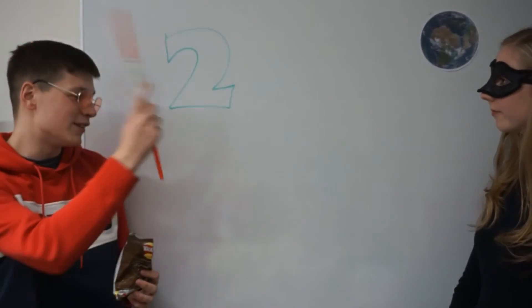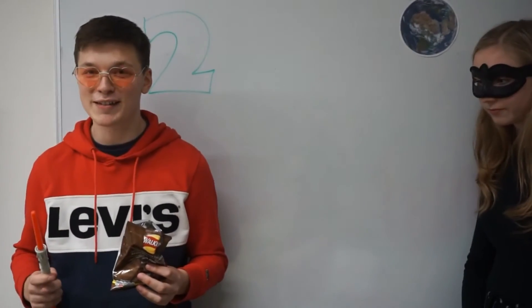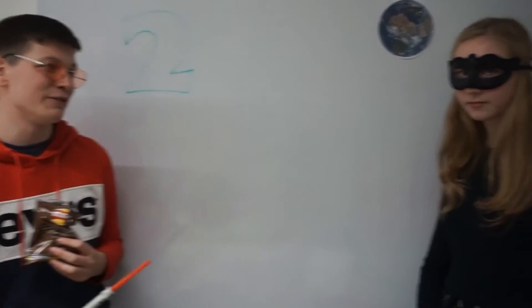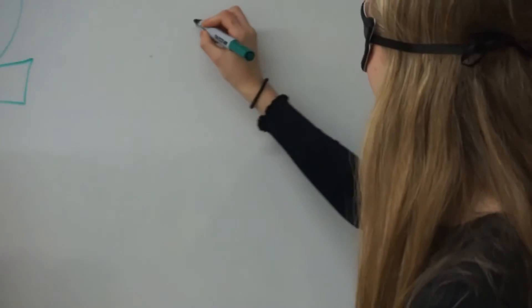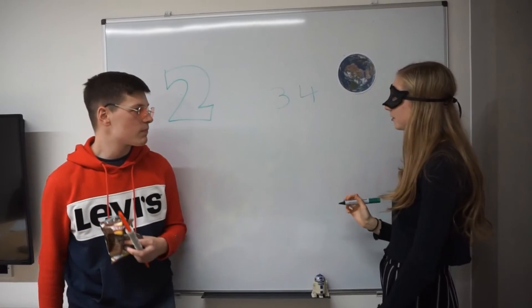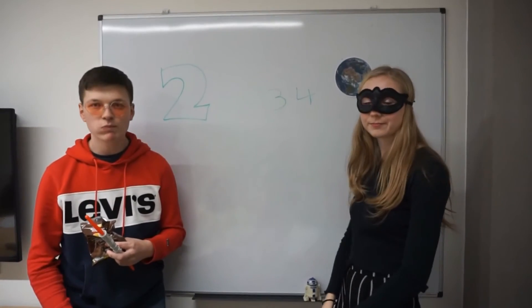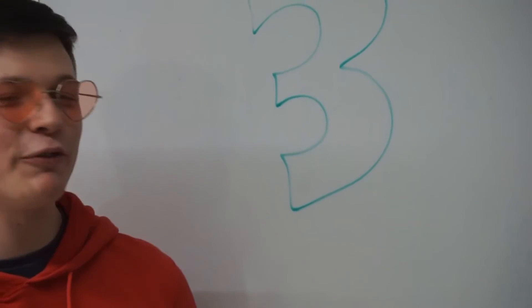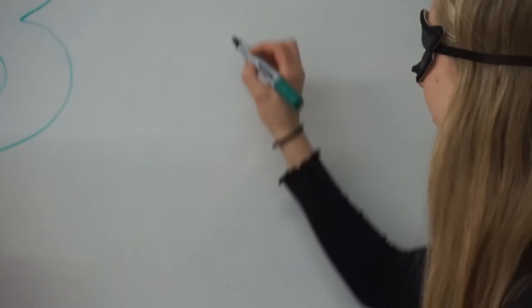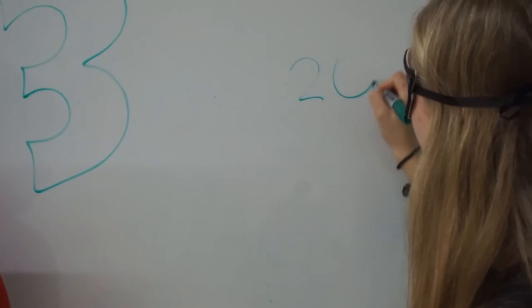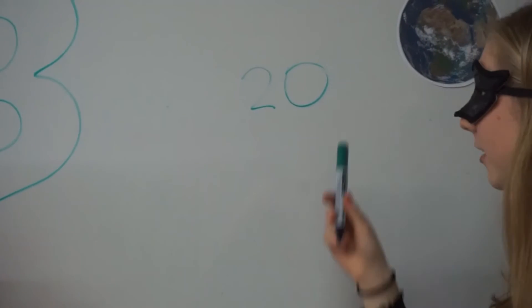A number is divisible by 2 if the last digit is also divisible by 2. For example, 34 ends in 4 which is 2 times 2, so 34 is divisible by 2. A number is divisible by 3 if the last digit is 3 or 0. For example, 20 is divisible by 3 because the last digit is 0.